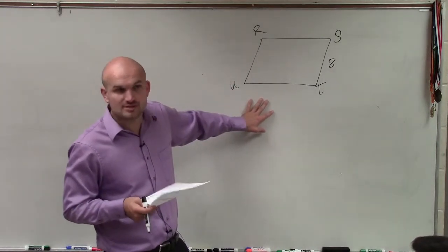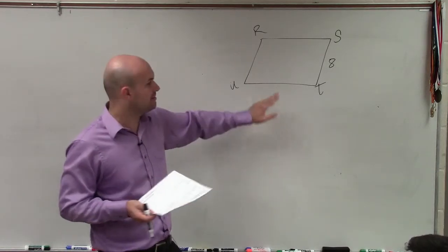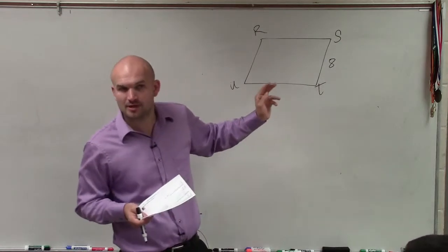So the thing we know is we know that the perimeter is equal to 42. So what we have to do is remember, well, what exactly is the perimeter? Remember, the perimeter is going to be the distance around a parallelogram.